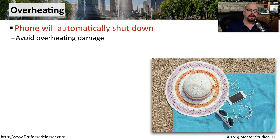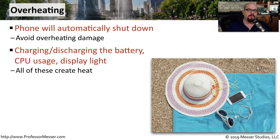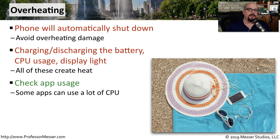Heat is the enemy of any electronic device, so you want to be sure that you keep your phone from overheating. If your phone gets too hot, it will automatically shut down to prevent damage to the internal components. This heat can come from many different sources — not just leaving it in the sun, but also charging or discharging the battery, or using an application that uses a lot of CPU. Even using the display light causes a little bit of heat. To see if heat is coming from an application, you can check the app usage chart to see if one particular app is using more CPU cycles than another.